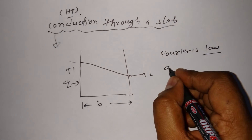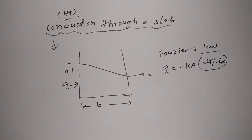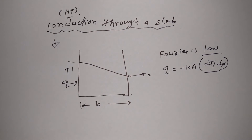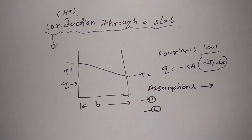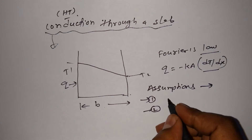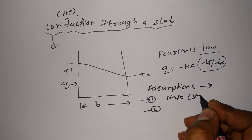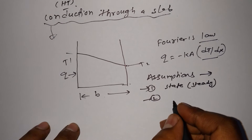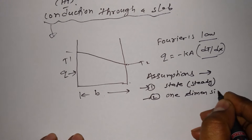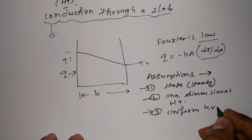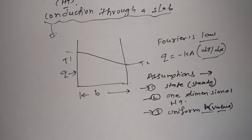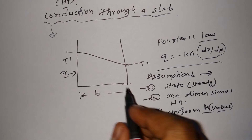According to Fourier's law: q = -kA dT/dx. I have already shared what Fourier's law is and the reason behind the minus sign. But here we take a few assumptions. First: steady-state condition. Second: one-dimensional heat transfer. Third: uniform k value — the thermal conductivity is uniform throughout the slab.